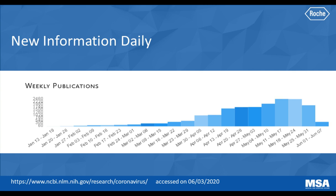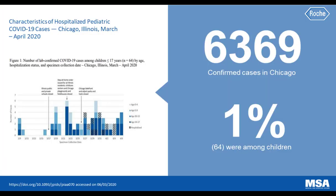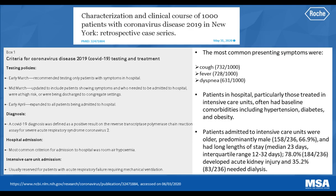We have learned a lot about this novel pathogen, as evidenced by the number of weekly publications on NCBI and in peer-reviewed journals. One study indicated that out of a population in Chicago with 6,369 confirmed cases, only 64 — or 1% — were among children less than 17 years of age. Additionally, the majority of these children were not hospitalized; those that were had comorbidities such as diabetes or obesity.